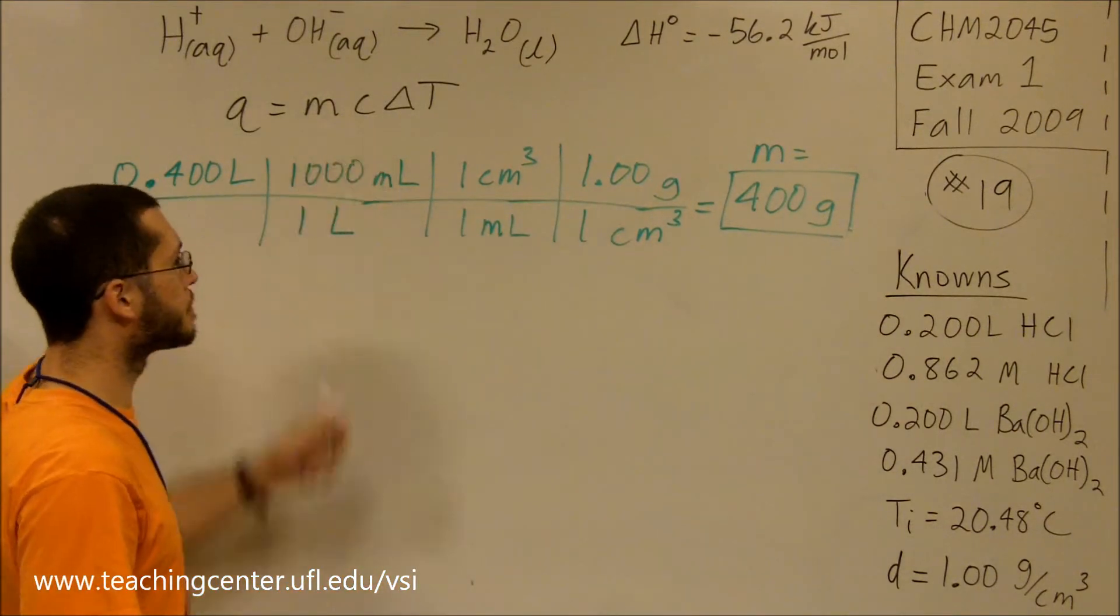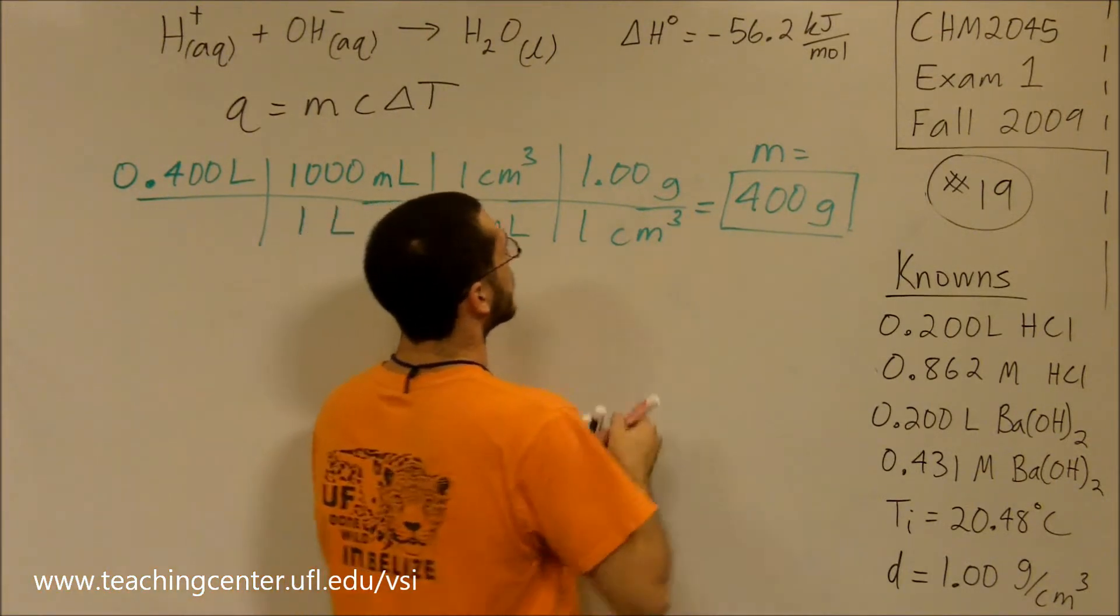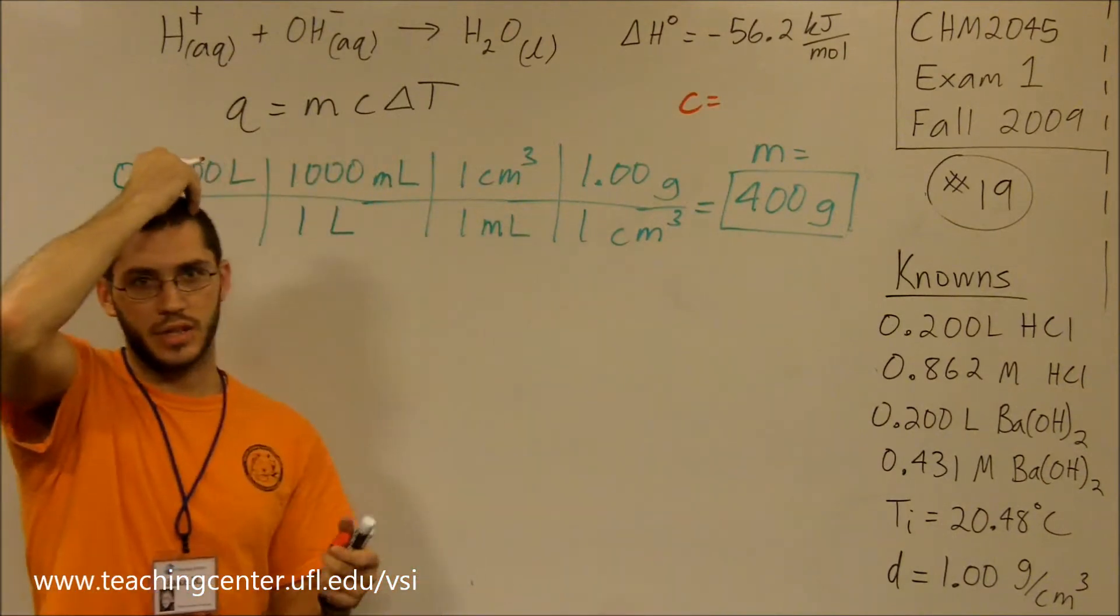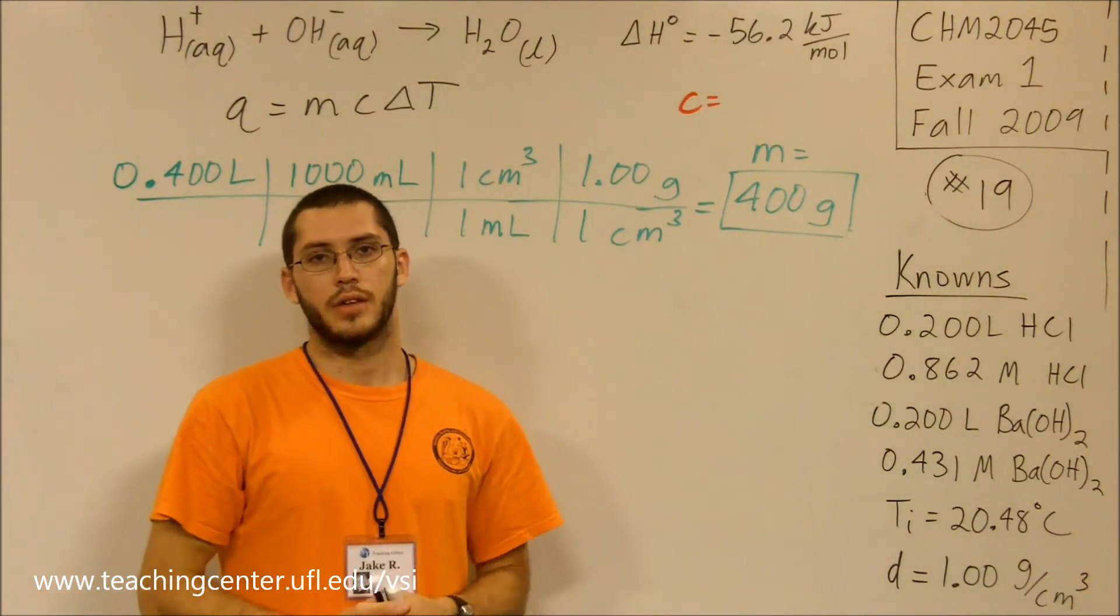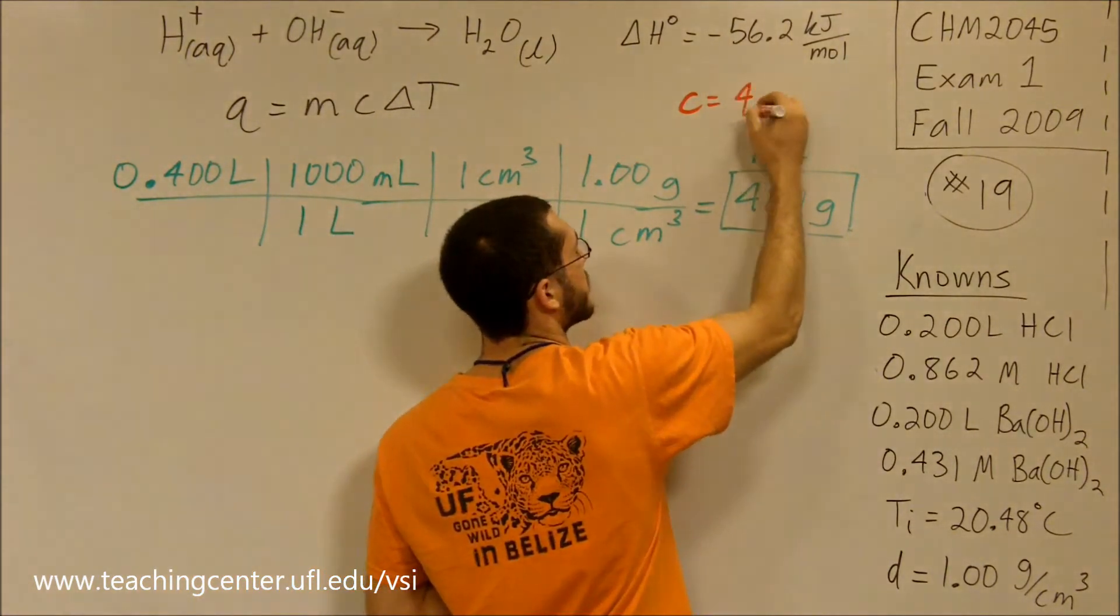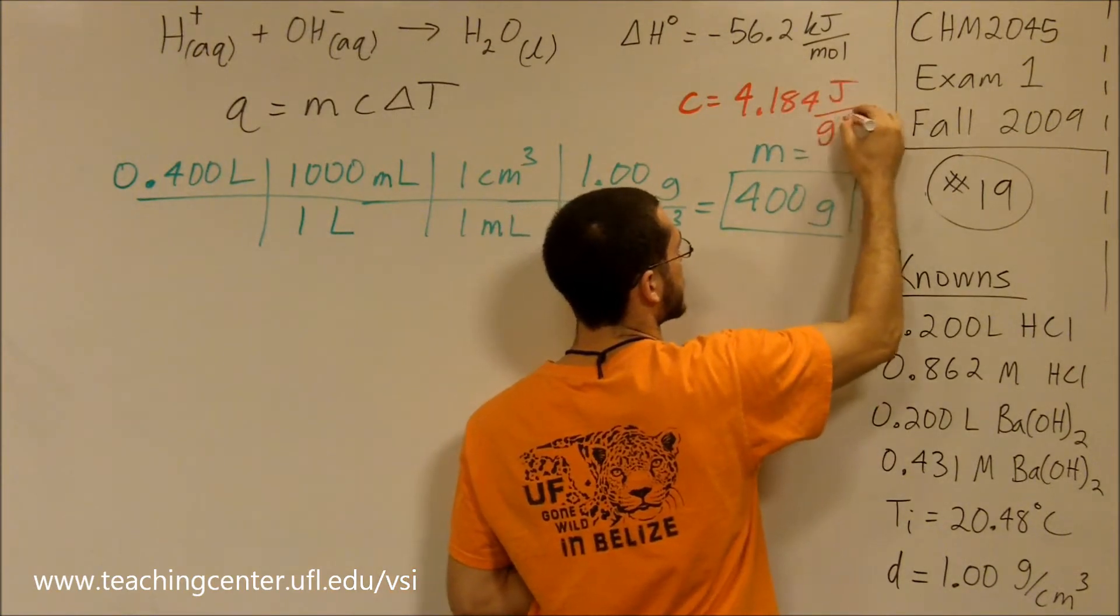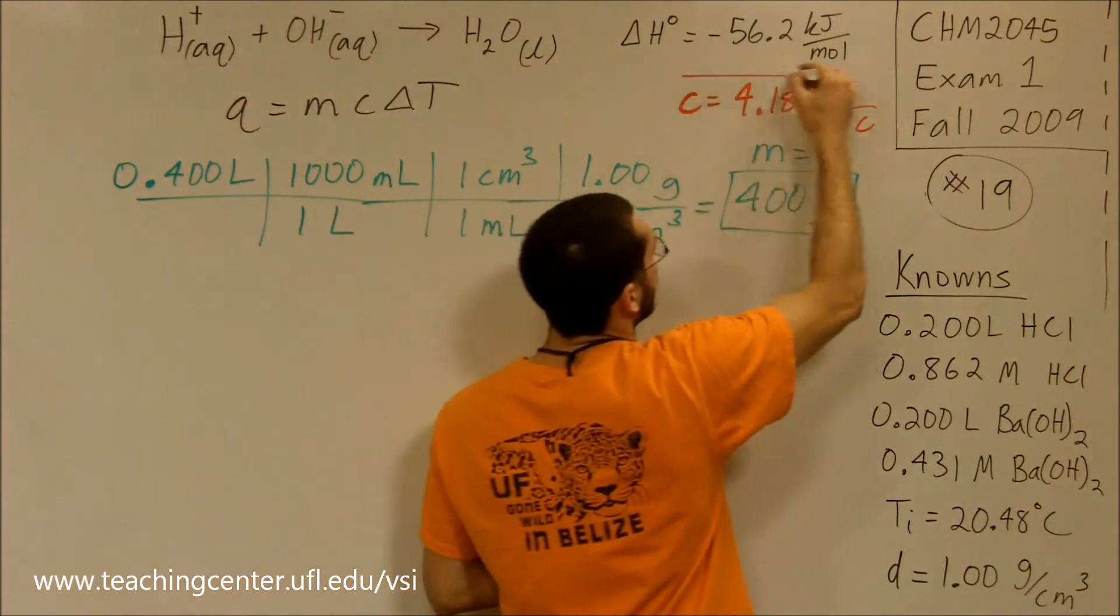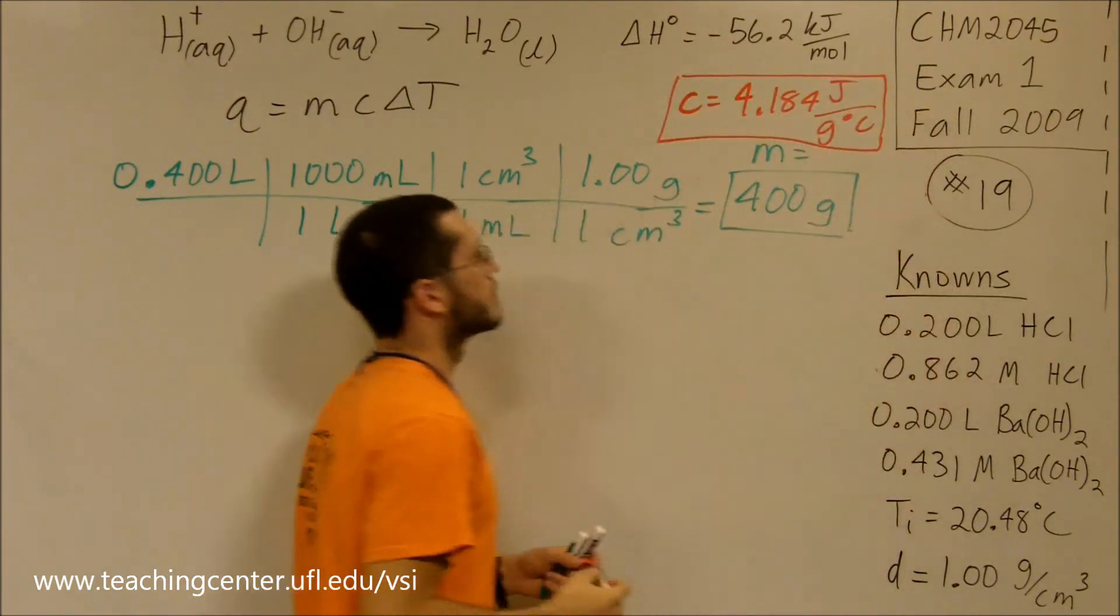So m equals 400 grams. What is c? c is the specific heat of the solution, and although they don't give it in the front of your test, hopefully you know that the specific heat of water is 4.184. If not, learn it now, it will become your tool of destruction.